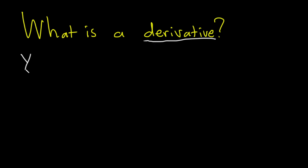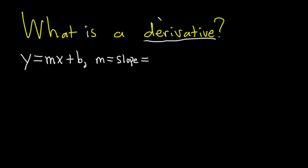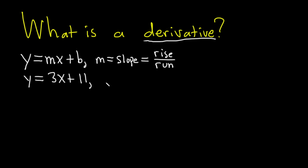We know that for straight lines, given by say y equals mx plus b — this is the slope-intercept formula — we know the slope, which is m. Recall the slope is given by that familiar formula, rise over run. This is a very powerful formula: if you have something like y equals 3x plus 11, you can just look at this line and you know the rate of change — you know it's 3. So even though it's very simple mathematics, it is also very powerful.